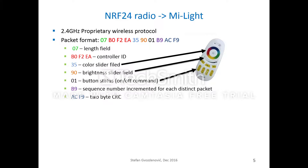The wireless radio talks to the light bulb through a proprietary 2.4 GHz wireless protocol. An example packet format is shown with different fields colored uniquely. Interesting control fields include the color slider field, brightness slider field, and button status field.